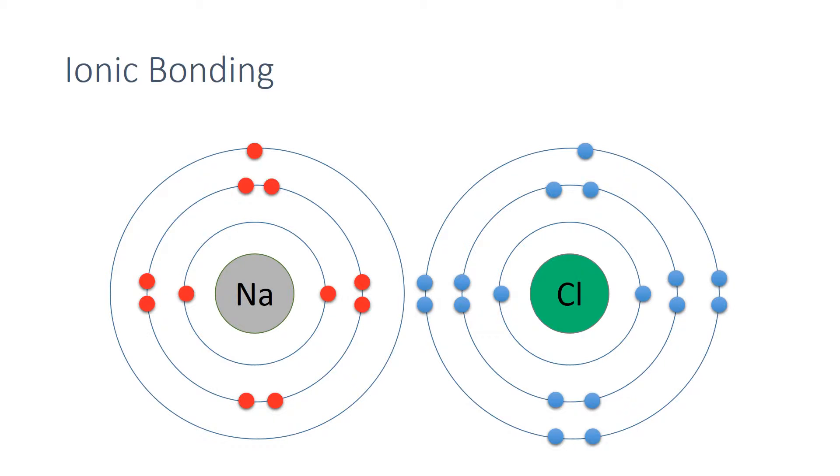To achieve a full outer shell and gain the electronic structure of a noble gas, the sodium needs to lose one electron. And to gain a full outer shell, the chlorine needs to gain one electron.